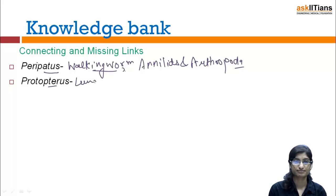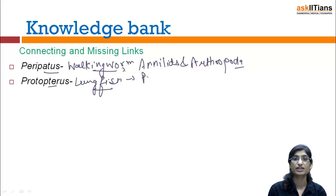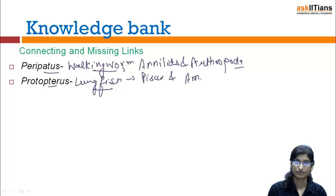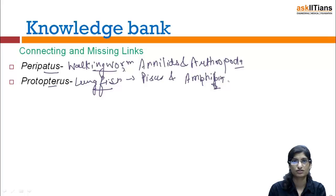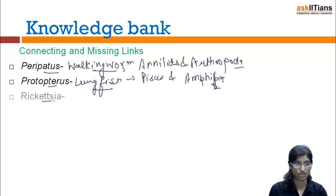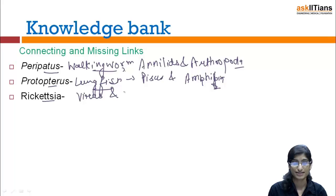Next one is Protopterus — it is the lung fish, and this is the connecting link between fishes (Pisces) and Amphibia. Amphibia live in both water and terrestrial conditions. So this lung fish is the connecting link between them. Then Rickettsia — it is basically the connecting link between viruses and bacteria.